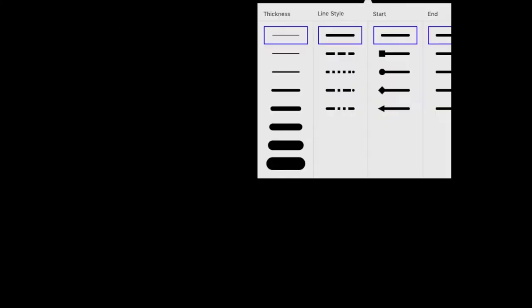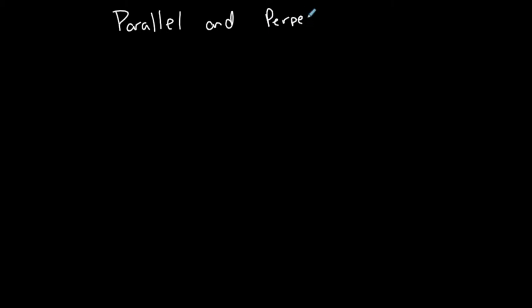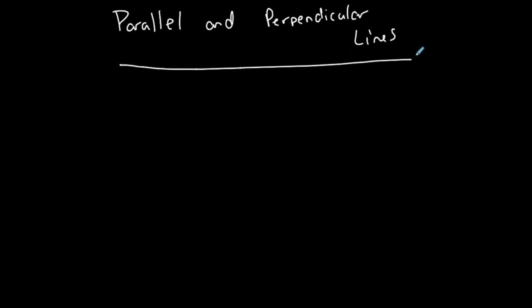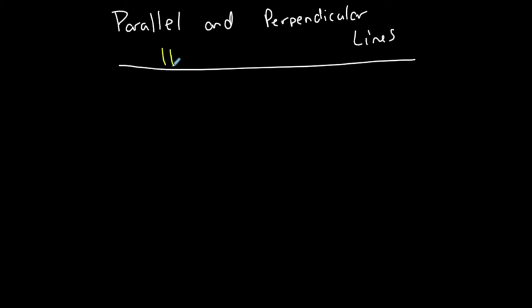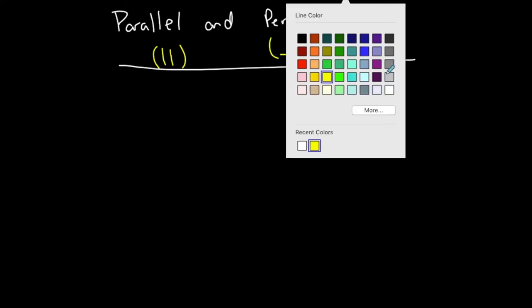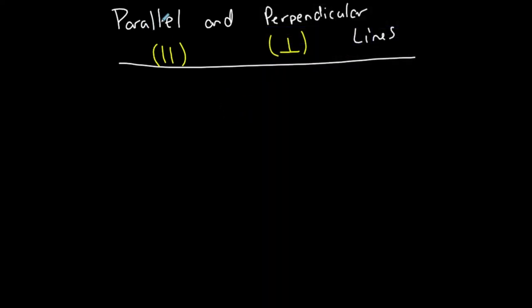Parallel and perpendicular lines. The symbol for parallel lines is two vertical lines next to each other. The symbol for perpendicular is like an upside-down T. So if you see me use these symbols, that's what they mean.